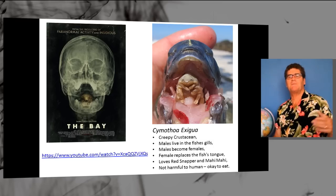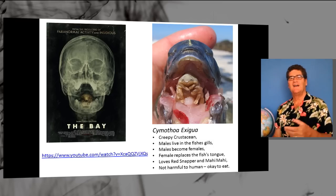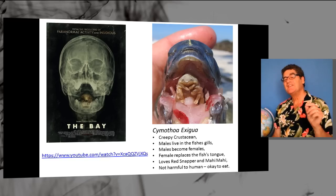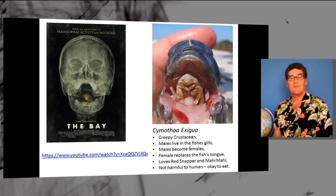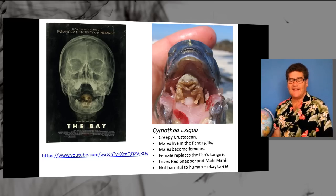Here was a creepy crustacean. The males live in the fish's gills. The males become females. The female replaces the fish's tongue. And these guys love red snapper and mahi mahi. Now they're not dangerous to humans. And they're even okay to eat.